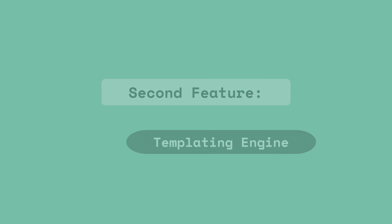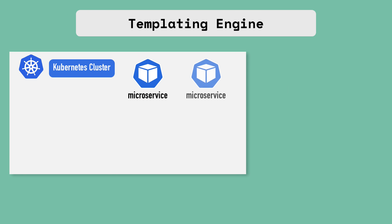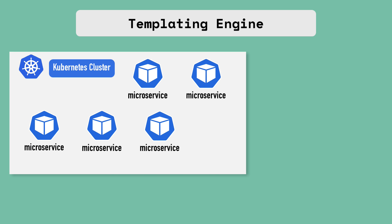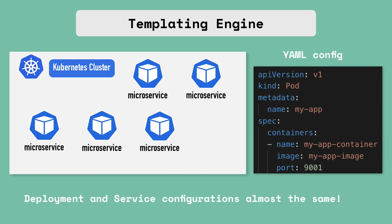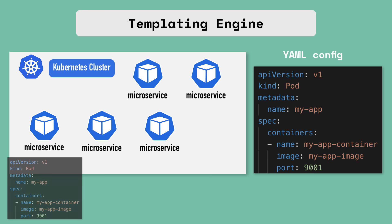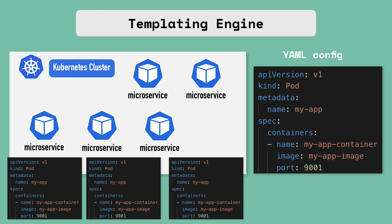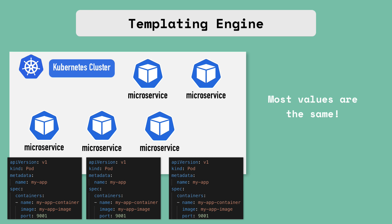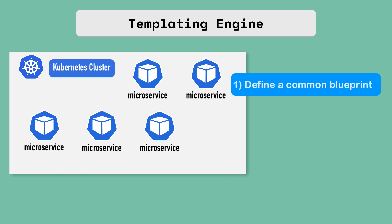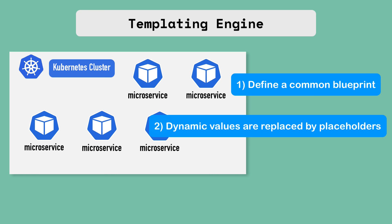Another functionality of Helm is that it's a templating engine. Imagine you have an application made up of multiple microservices, all deployed in your Kubernetes cluster, where the deployment and service configuration of each microservice are pretty much the same — with the only difference being the application name, version, or Docker image name and version tags. Without Helm, you would write separate YAML configuration files for each microservice, with each one having its own application name and version defined.